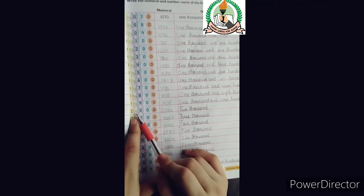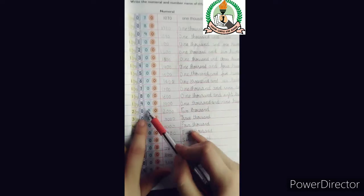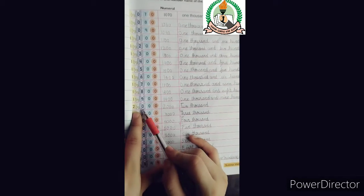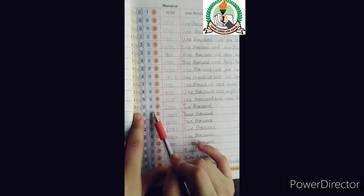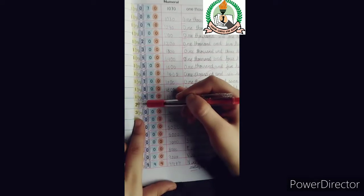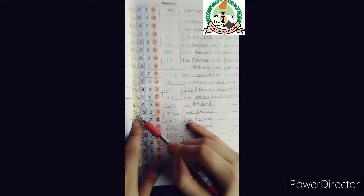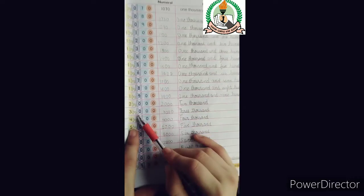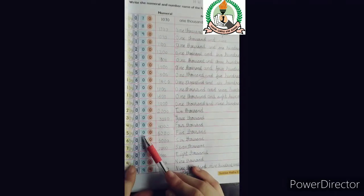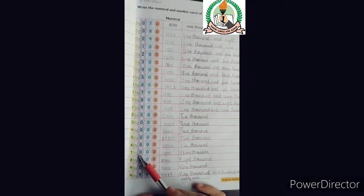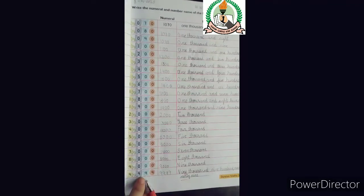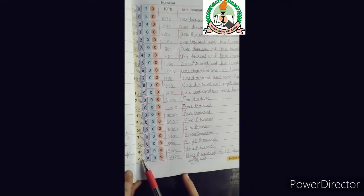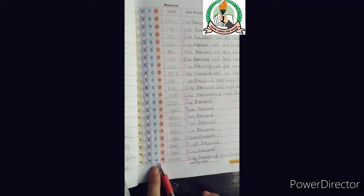After 2000, the thousands place value will change. 2000, 3000, 4000, 5000, 6000, 7000 and onward. The last question is 9000, 900 and 99. This is our question. It's a very important question.